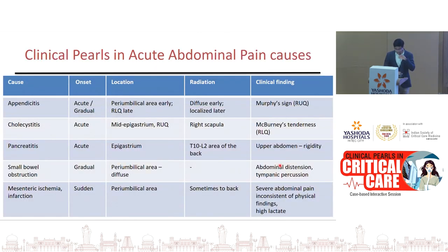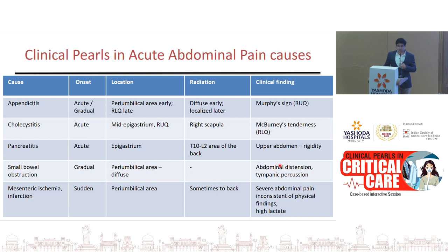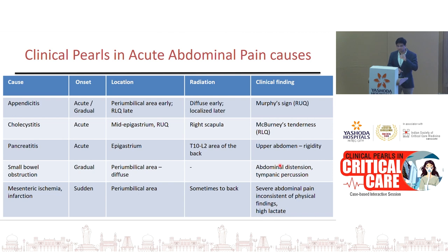Some clinical clues in acute abdomen: peri-umbilical pain transforming to the right lower quadrant suggests appendicitis — tenderness at McBurney's point (junction of two-thirds from the umbilicus and right anterior superior iliac spine). Pain in the epigastric region or right upper quadrant radiating to the right infrascapular region suggests GB pathology like cholecystitis. Acute upper abdominal pain radiating to the back from T10 to L2 suggests pancreatitis. Severe intolerable pain with a soft abdomen on examination — discrepancy between pain severity and examination findings with high lactate — suspect mesenteric ischemia.